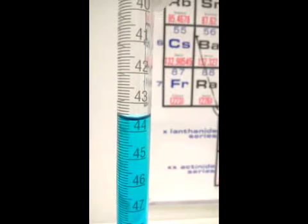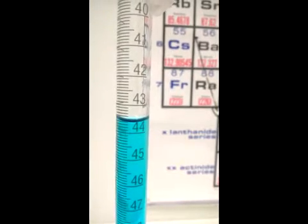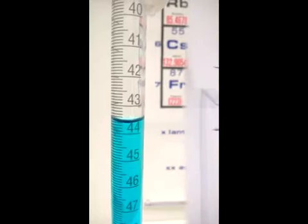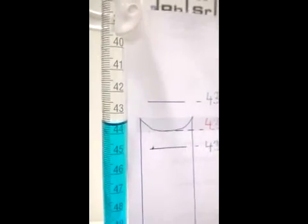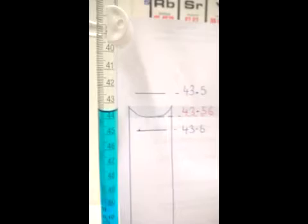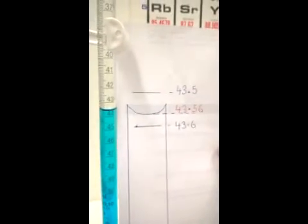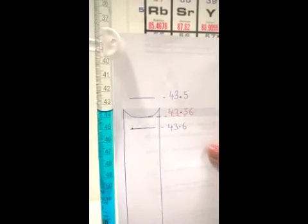Here, the top and bottom of the meniscus lies between 43.5 and 43.6 milliliters. Therefore, my estimation would be approximately 43.56 milliliters.